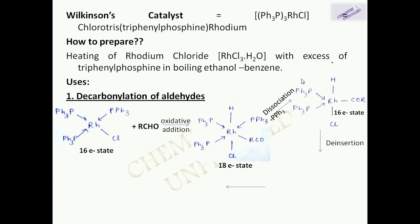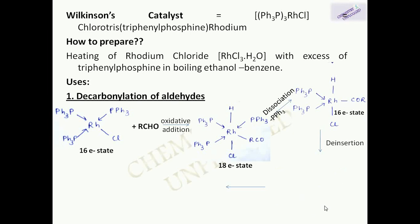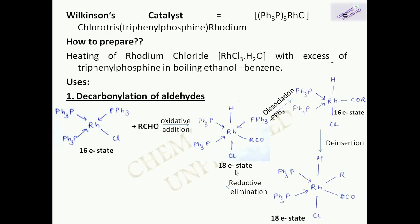The next step is dissociation, which causes removal of one PPh₃ ligand and the complex again occupies a 16-electron state. Then it undergoes d-insertion, where RCO breaks to give R and CO, and the complex occupies an 18-electron state again.